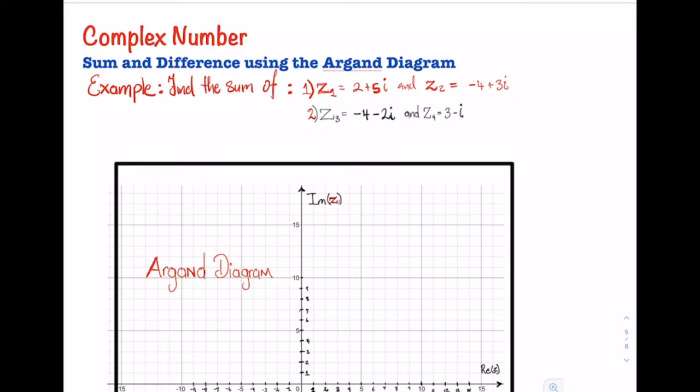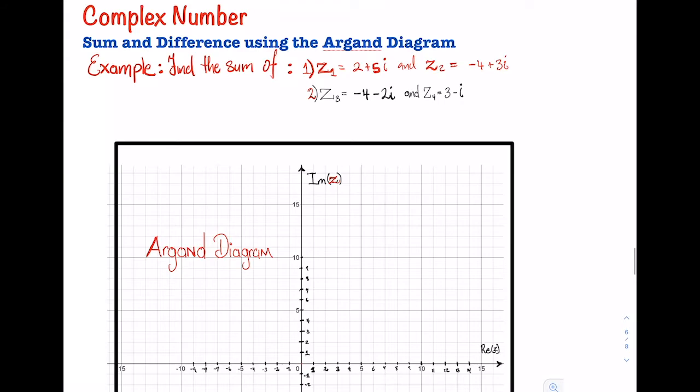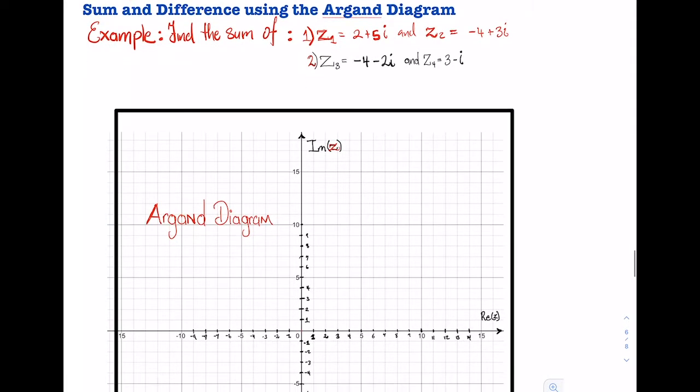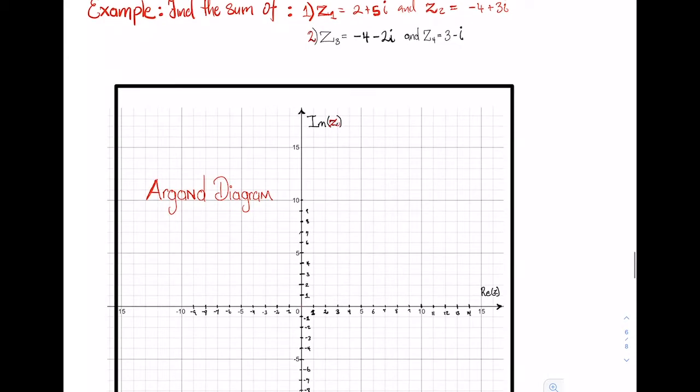So here I have two examples for us. Jumping right into the first example, it says find the sum of Z1 and Z2, where Z1 is equal to 2 plus 5i, and Z2 is equal to minus 4 plus 3i. In order to find the sum of complex numbers using Argand diagrams, of course we need our Argand diagram. Let's jump right down on our Argand diagram here, where we have to put in those two complex numbers and represent each of them on the Argand diagram.